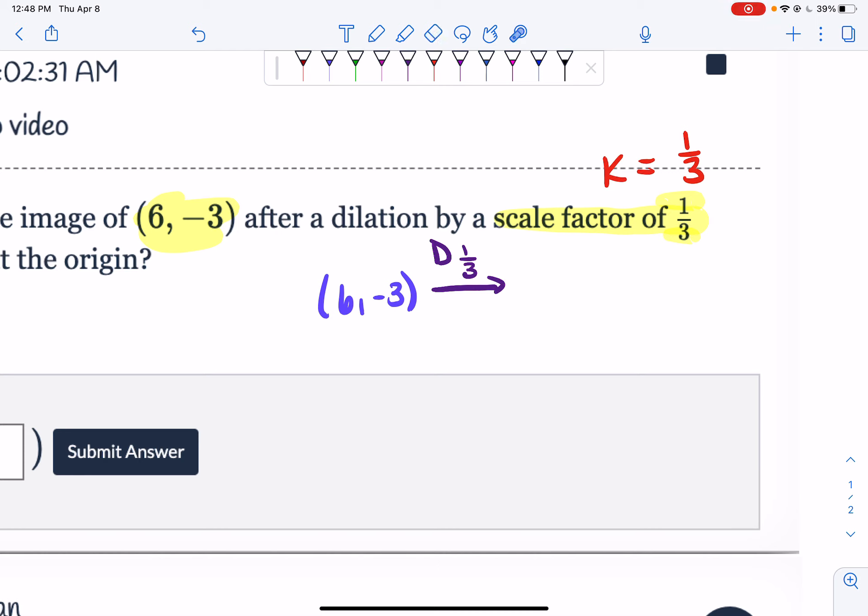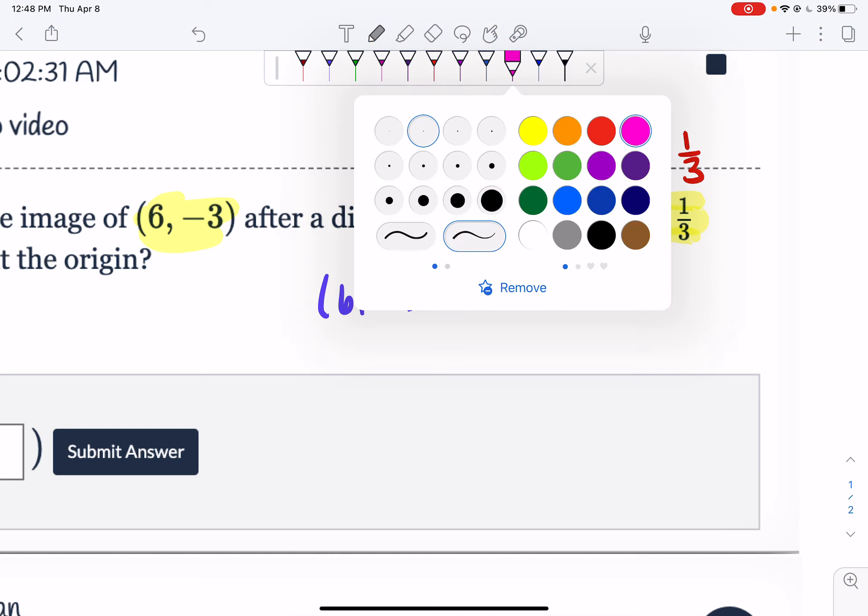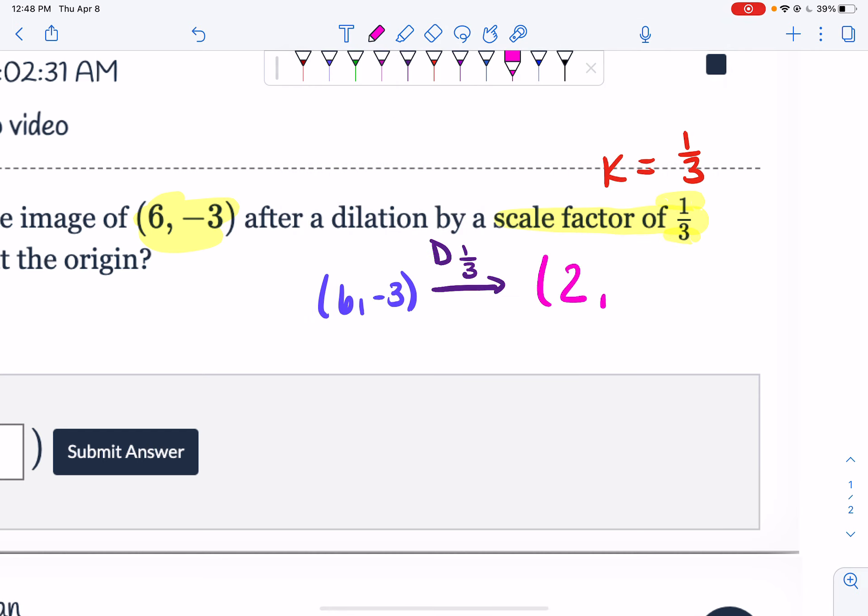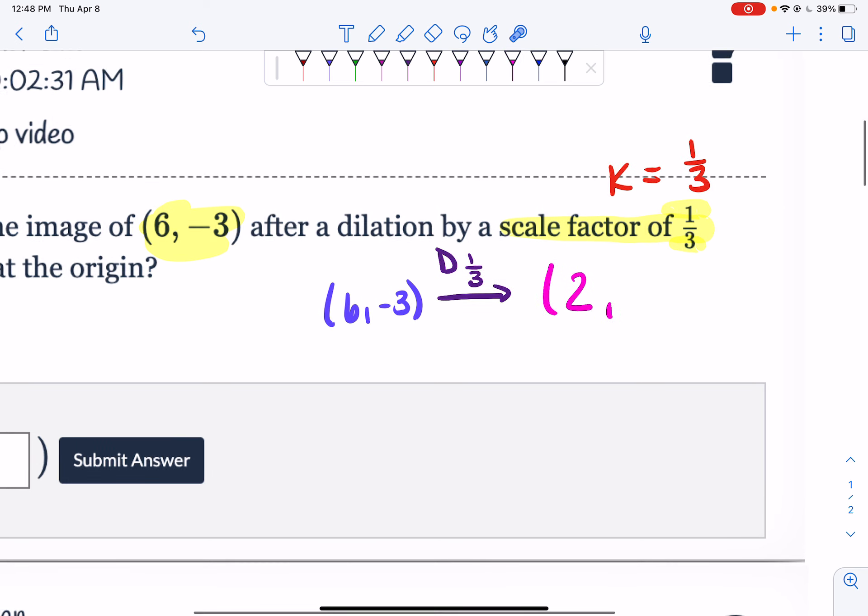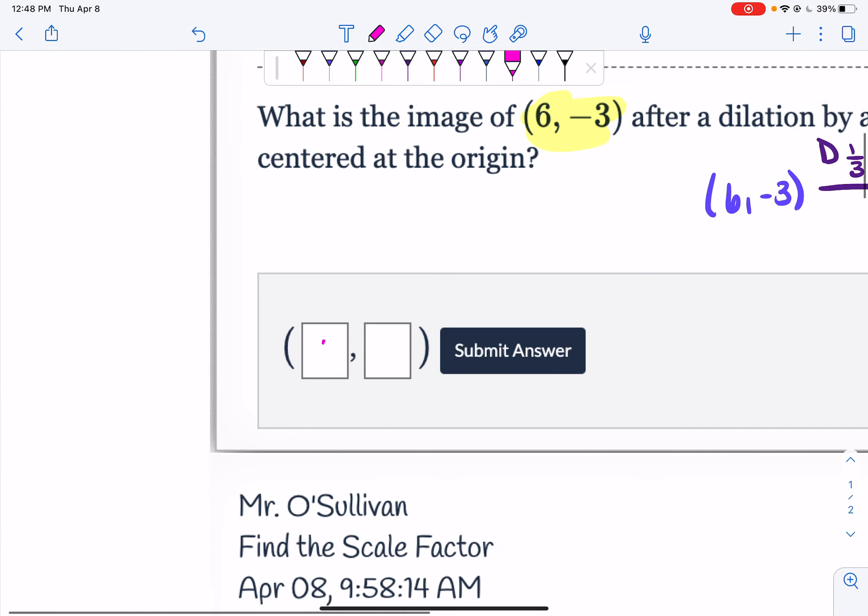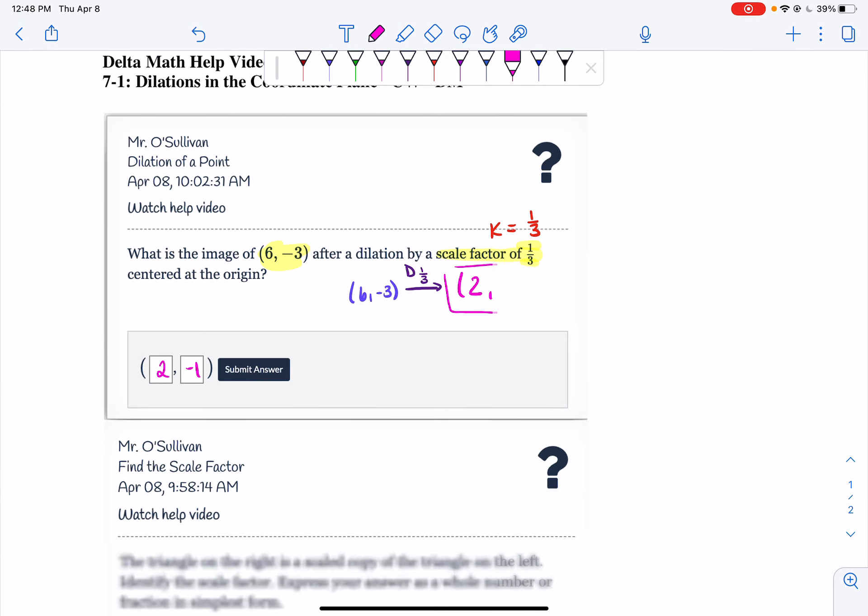6 times 1 is 6. 6 divided by 3 is 2. So I can say that my x-coordinate of my dilated point is 2. Now, I take my negative 3 and I multiply that by a third. So I take my negative 3 and I do negative 3 times 1, which is negative 3. And then negative 3 divided by 3 is negative 1. So my dilated point is (2,-1). And that's your final answer.